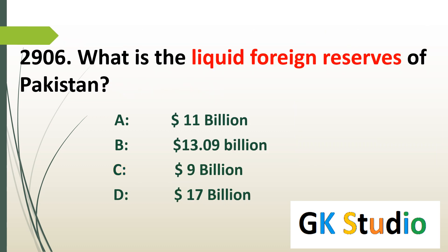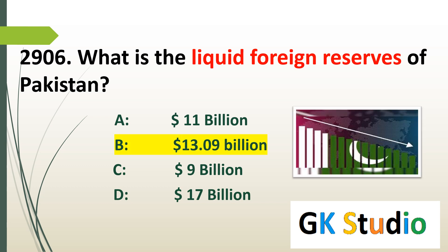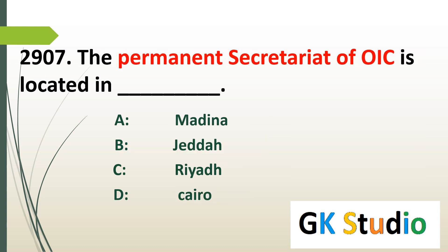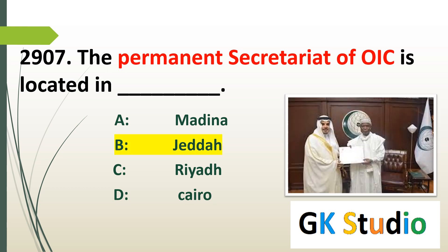What are the liquid foreign reserves of Pakistan recently in 2024? 10.09 billion. The permanent secretariat of OIC — Organization of Islamic Cooperation — is located in Jeddah.